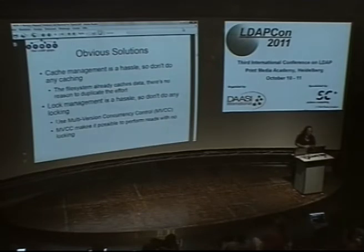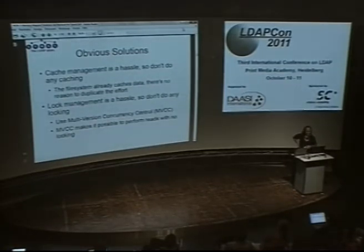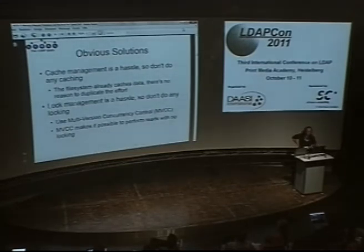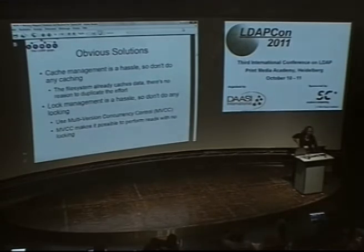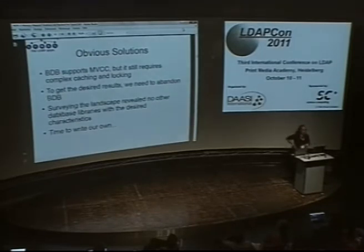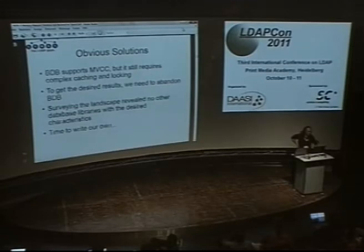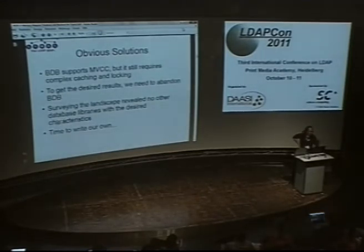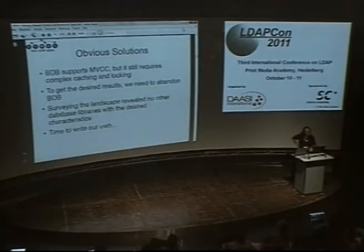So what's the obvious thing to do? This cache stuff really sucks — let's get rid of it. And the caching causes all these locking problems, so let's not do any locking either. The idea: just rely solely on file system caching and use multiversion concurrency control, where the basic idea allows readers to run without any database-level locks. Interestingly, Berkeley DB has supported MVCC since version 4.5, but we can't get any benefit from it because it still requires us to do our own cache management. Once we're stuck with our own cache management, all the other problems remain. So to make any progress, we have to move away from BerkeleyDB.